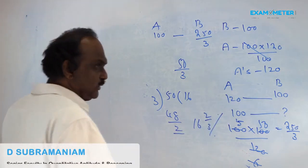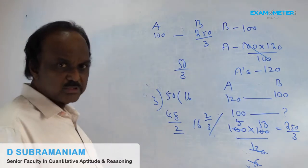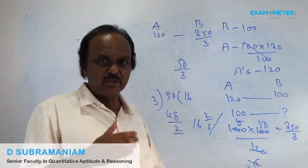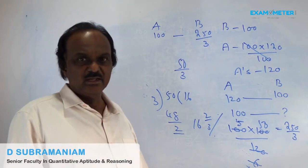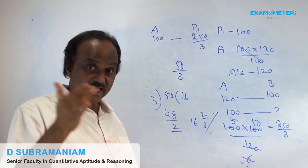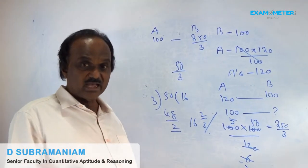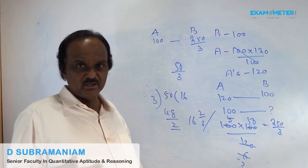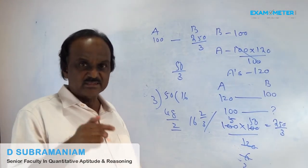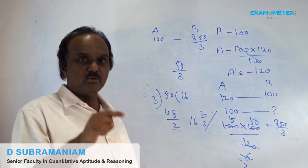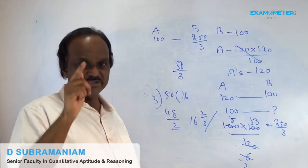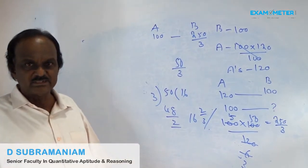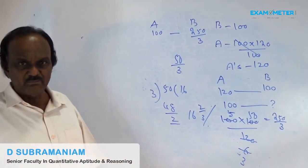So if A's salary is more than B's salary by 20%, B's salary is less than A's salary by 16⅔%. The answer is 16⅔%.